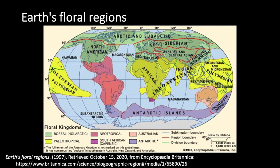The Capensic or South African kingdom consists of the southern and western tip of Africa — the area around the Cape of Good Hope. It is remarkably rich in plants, with 11 families and 500 genera all endemic to the region. This is the smallest phytogeographic kingdom in the world, and there is a certain general aspect of its vegetation akin to a scrubland vegetation.